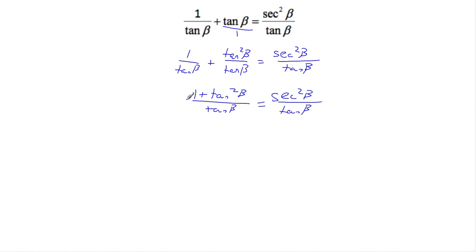Here, one plus tangent squared of beta, that is one of our trig identities. It's a Pythagorean identity that says that secant squared of theta equals one plus tangent squared of theta. I'm writing and talking at the same time, which is a dangerous mix.